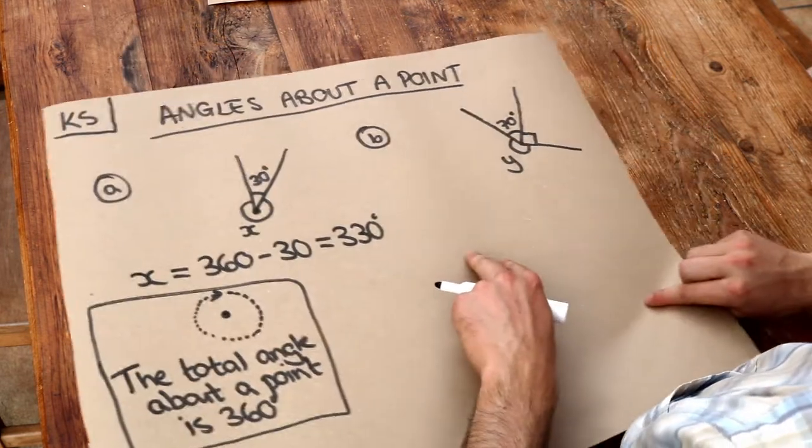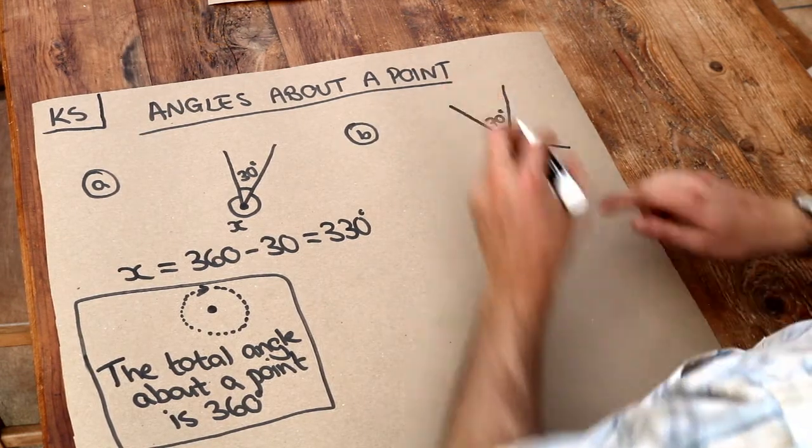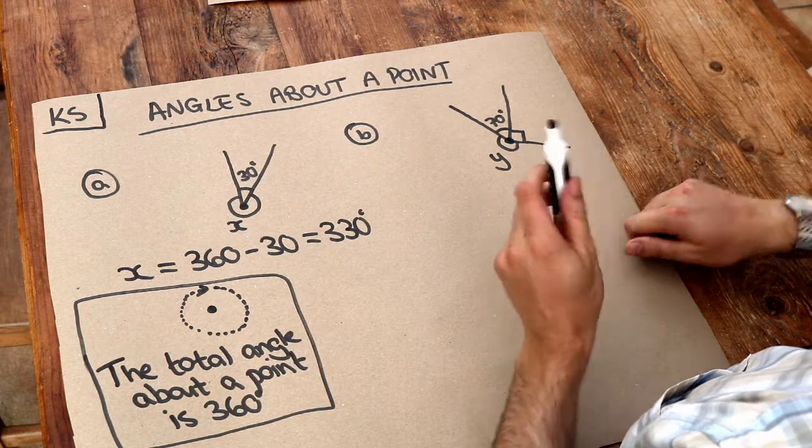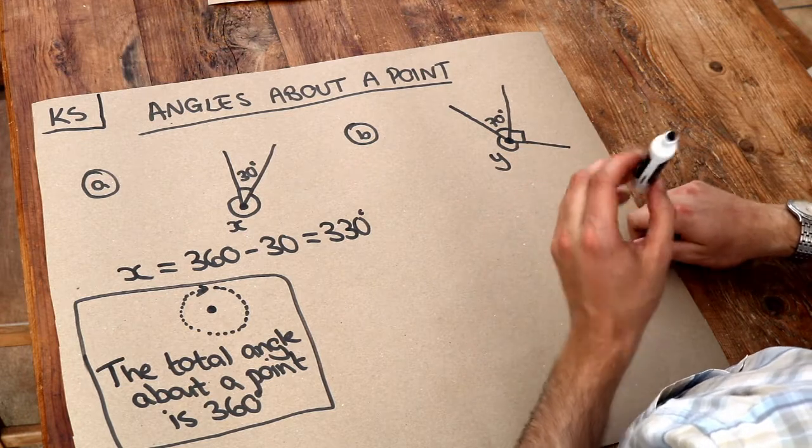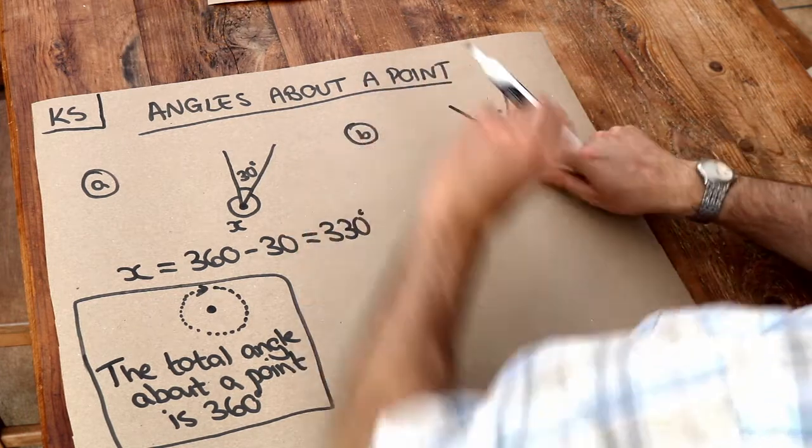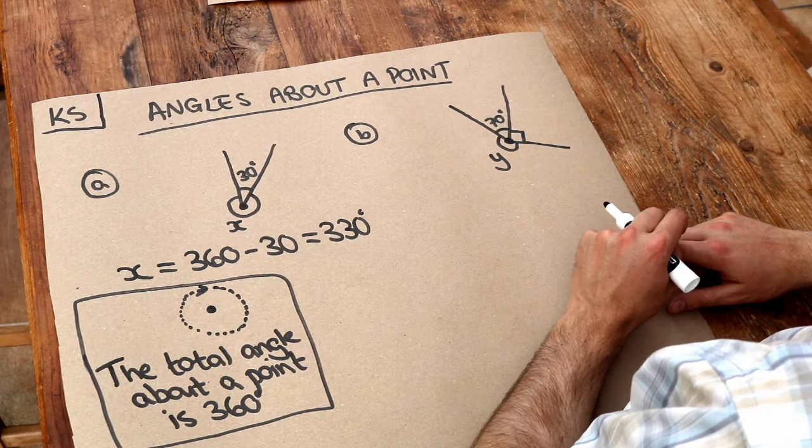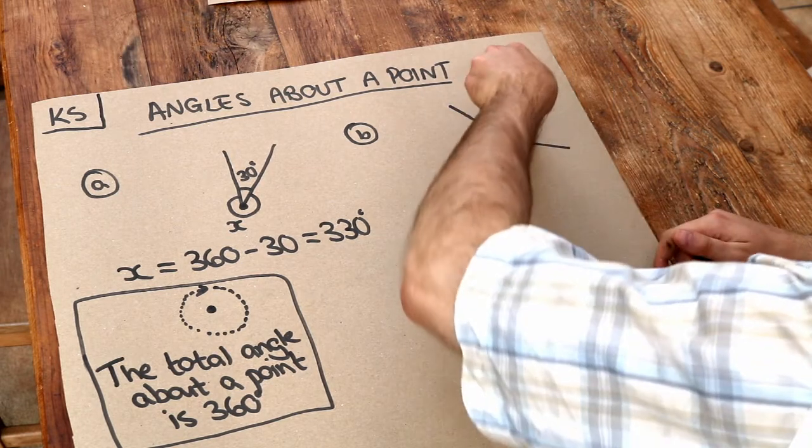What about this second example? We've got three angles here about this particular point. Remember, angles are always measured about a particular point, so you're turning about a particular point. So these three angles have to add up to 360 degrees because that is a full spin.